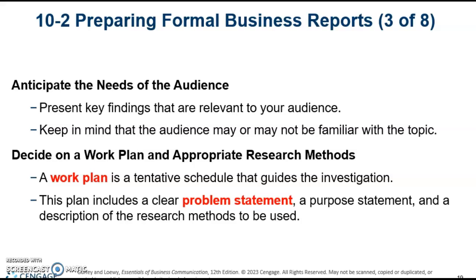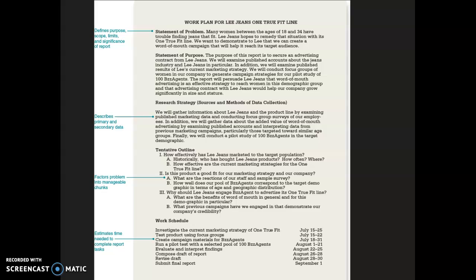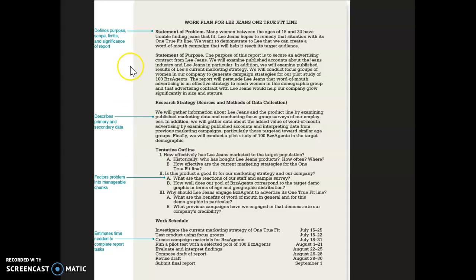Let's take a look at an example of a work plan. You can see it defines the purpose, scope, limits, and significance. It has a statement of problem and statement of purpose. Then it describes the primary and secondary data, has an outline, and factors problems into manageable chunks. Down here is the work schedule — the estimated time needed to complete report tasks. That's what a work plan looks like, and this is the work plan for Lee Jean's One True Fit Line.